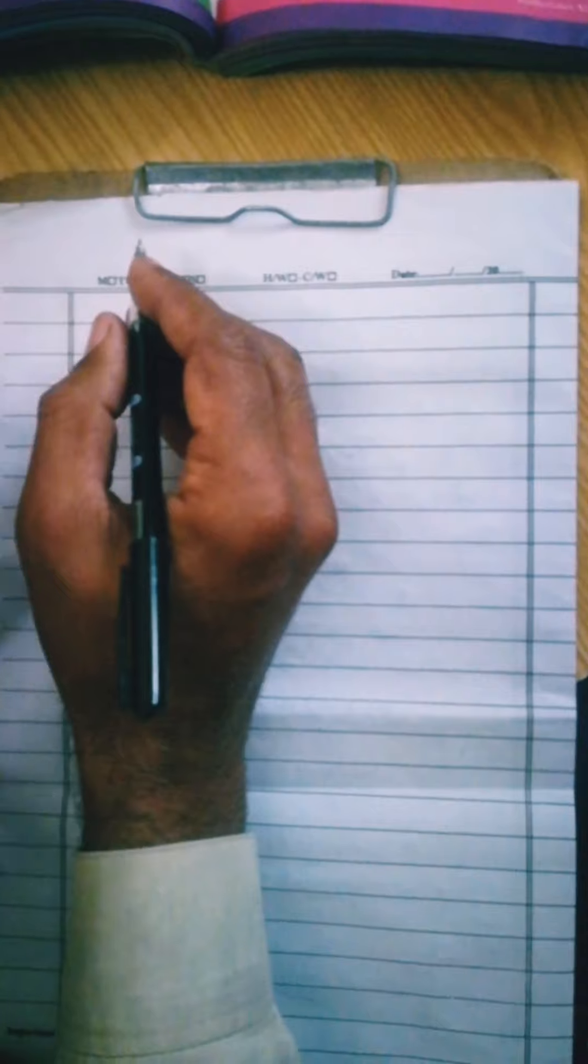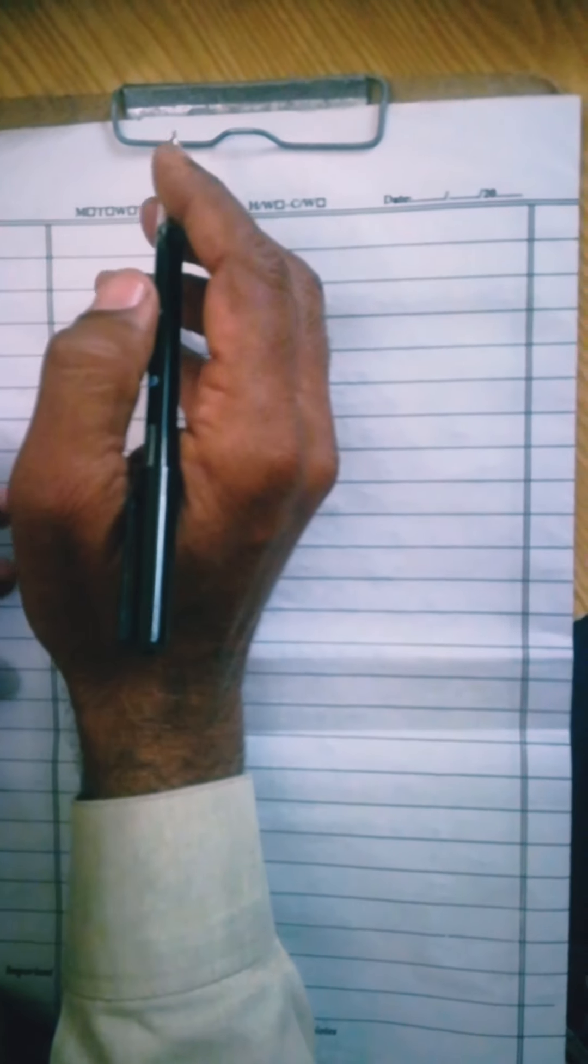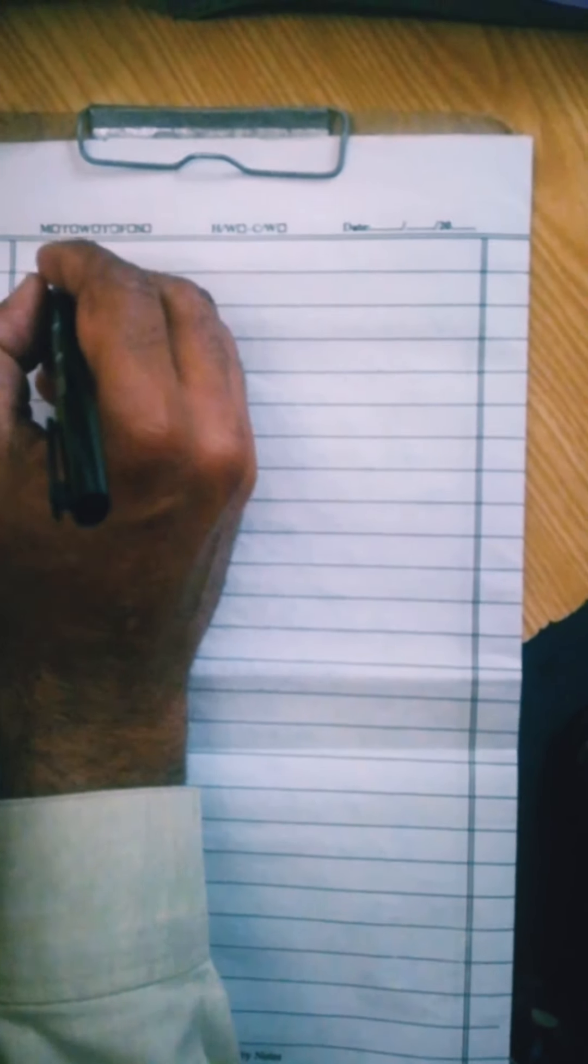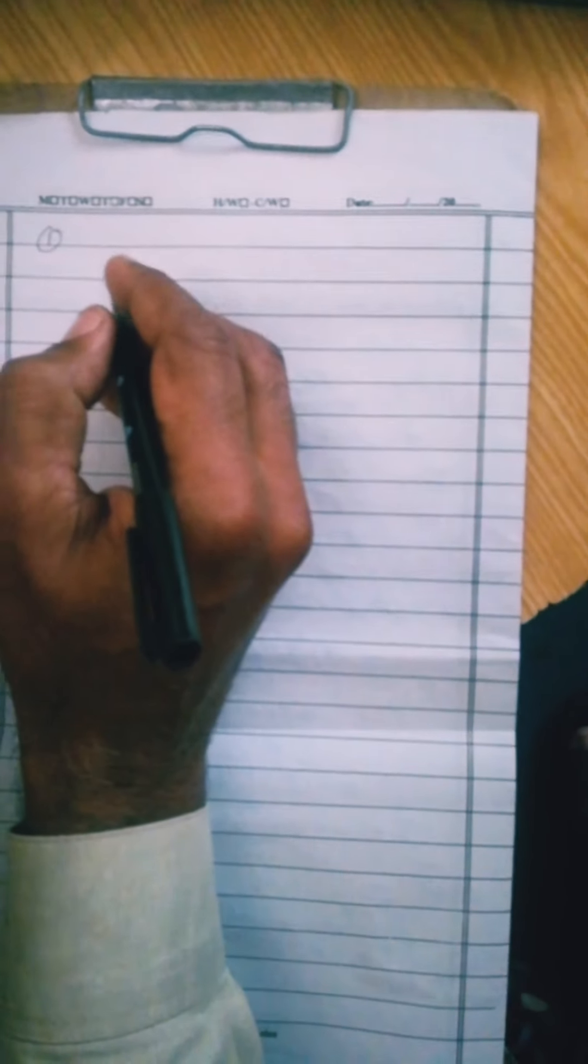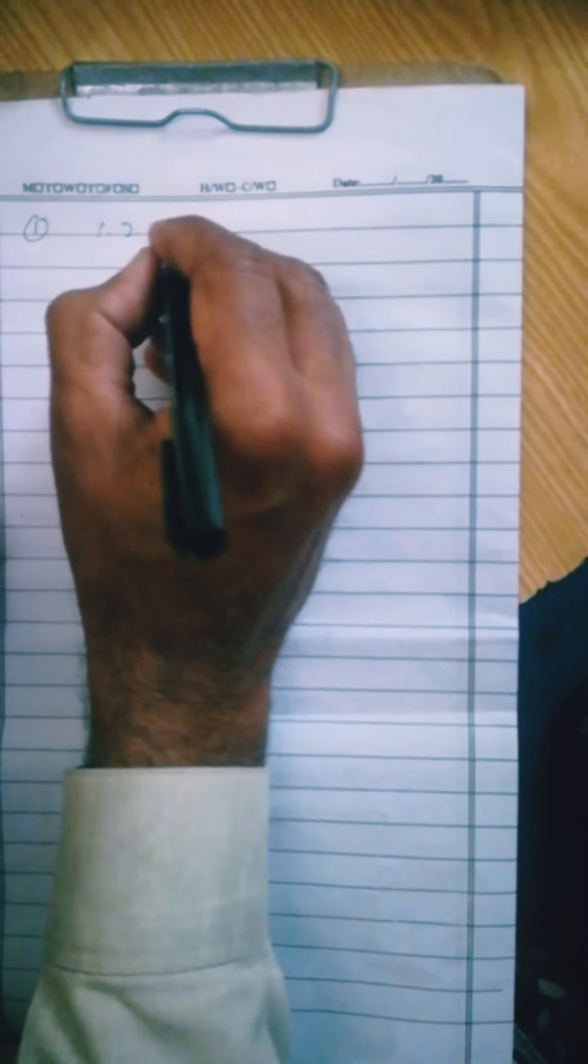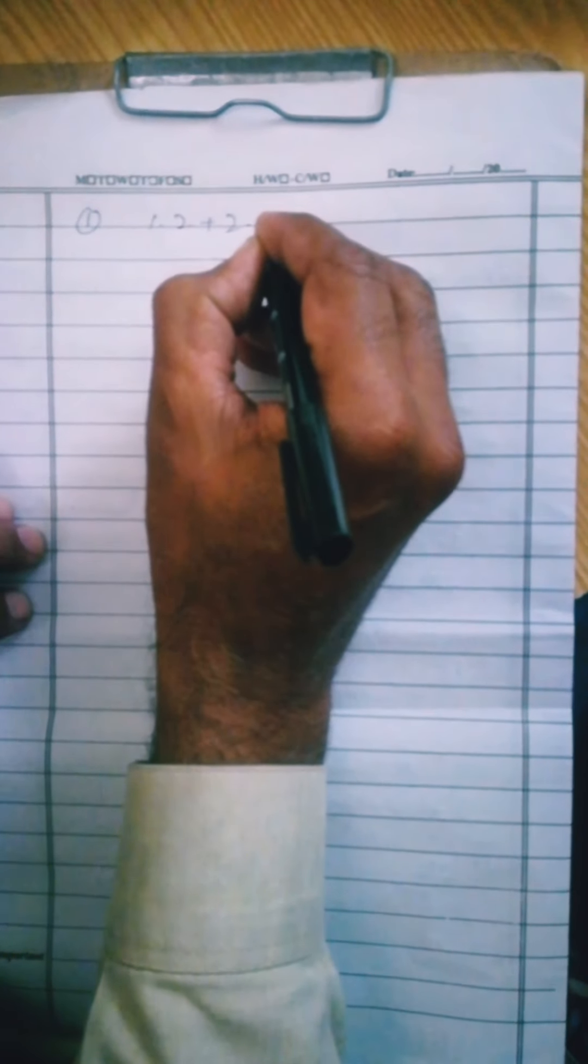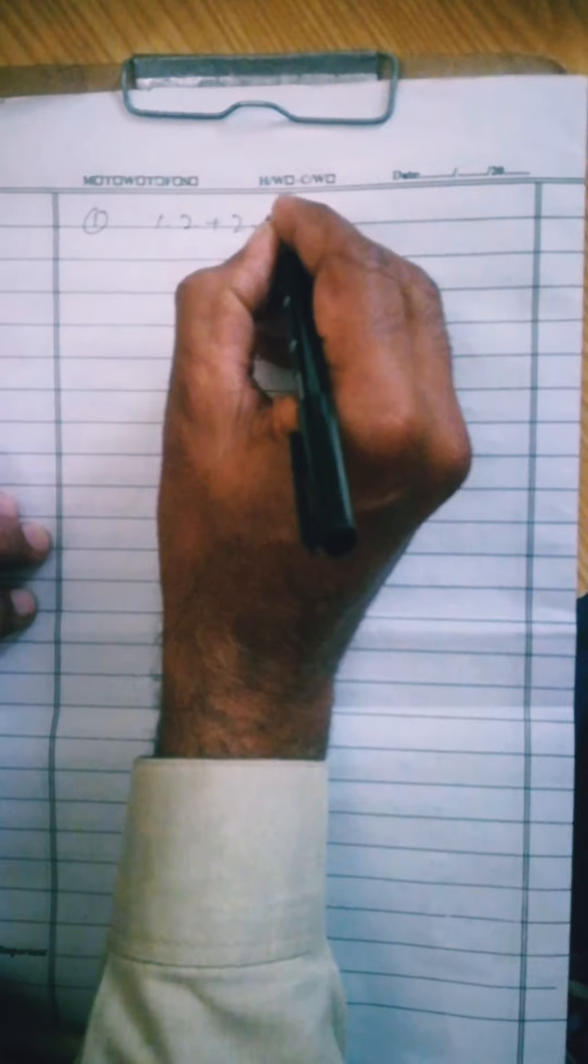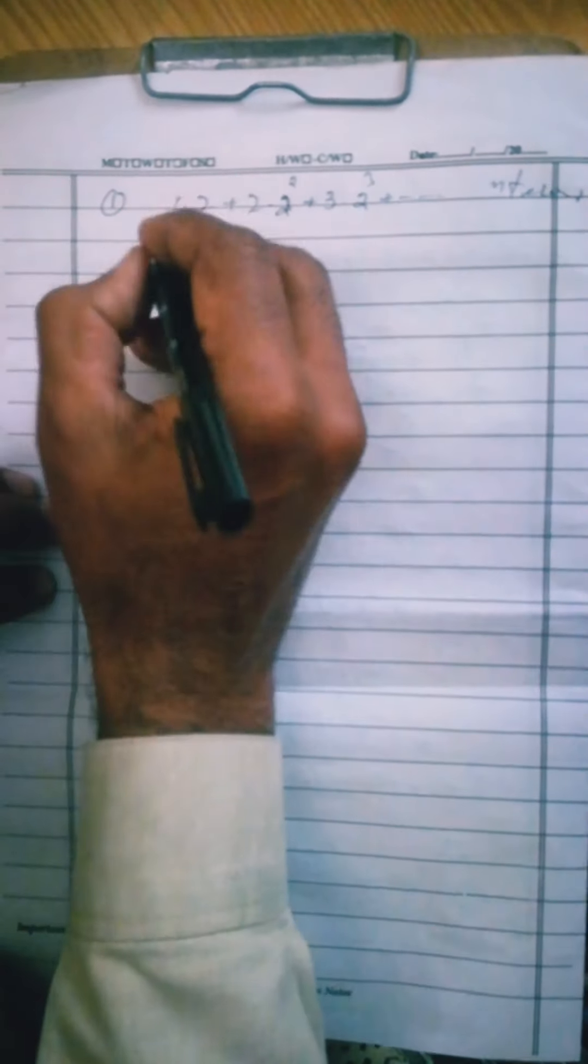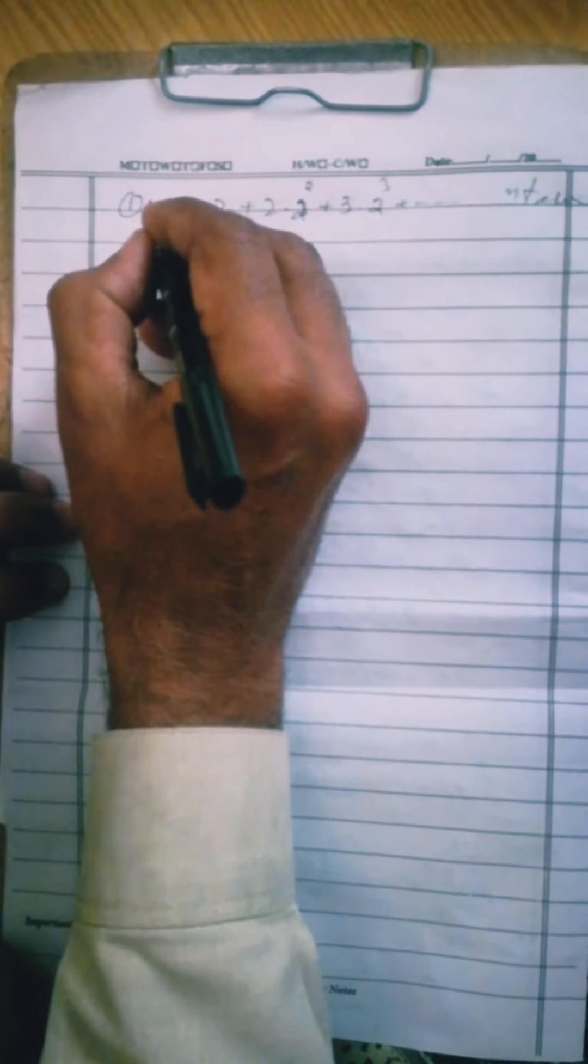Now in question number 1 there are 5 parts total. But the rest of the parts are simple. Question 1 part first, in this we need to change the approach a little. 1 multiply 2 plus 2 multiply 2 square plus 3 multiply 2 cube plus, up to n term. Now for this, part first, sn.